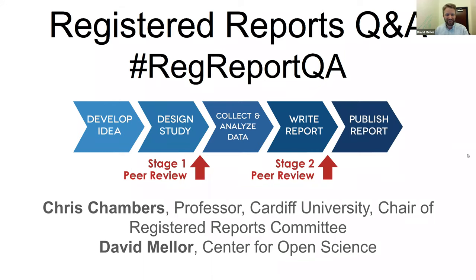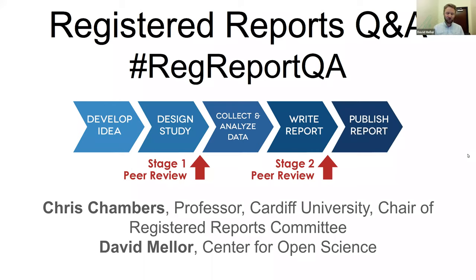Welcome everyone, we'll go ahead and get started. Welcome to the first, hopefully, of a regularly occurring series of Q&As for Registered Reports — the publishing model where peer review occurs before results are known and results are published regardless of outcome. With us today, I'm David Meller from the Center for Open Science and Chris Chambers, Professor of Neuroscience at Cardiff University and Chair of the Registered Reports Committee. Chris, can you give a little explanation of why we're doing this?